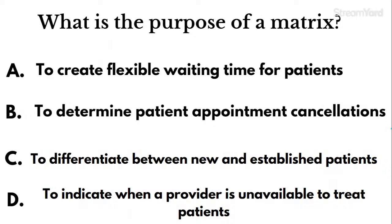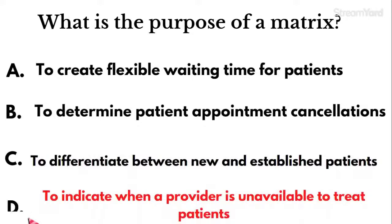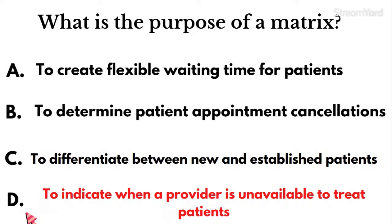Question seventeen: What is the purpose of a matrix — specifically an appointment matrix? Is it to create flexible waiting time, to determine patient appointment cancellations, to differentiate between new and established patients, or to indicate when the provider is unavailable to treat patients? The correct answer is to indicate when the provider is unavailable to treat patients. The very first thing you do with an appointment matrix is block off all unavailable times before you begin scheduling patients.